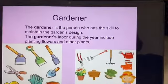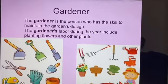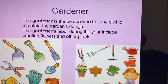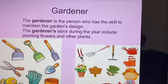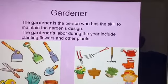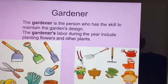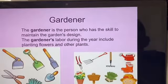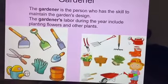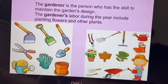The fourth one is gardener. Gardener is a person who has the skill to maintain the garden's design. Matlab jo garden mein kaam karta hai — plants ko grow karne ke liye ya plants mein jo weeds aa jaate hain woh nikaalne ke liye — usko bolte hain gardener. Gardeners' labor during the year includes planting flowers and other plants.